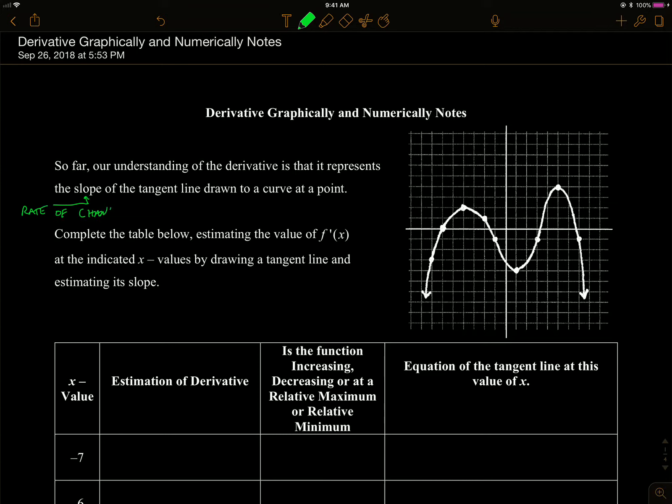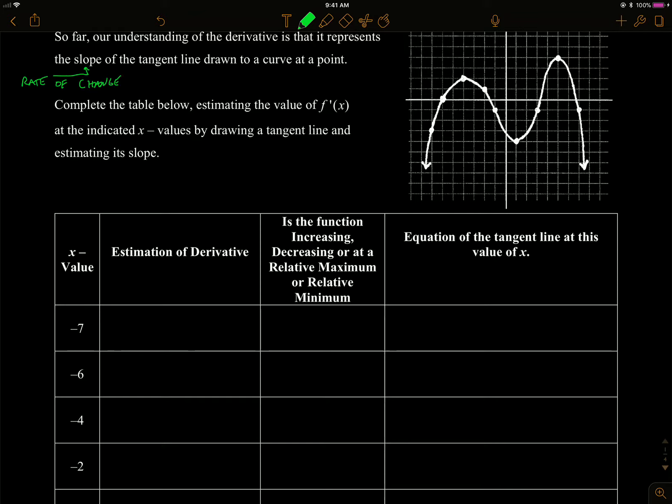So far we're looking at a derivative. We did the limit definition and we think of it basically as the slope of the tangent line drawn to a curve at a point. I want to remind you that a slope is a rate of change, so a derivative also is a rate of change. A slope is a rate of change, therefore a derivative is a rate of change.